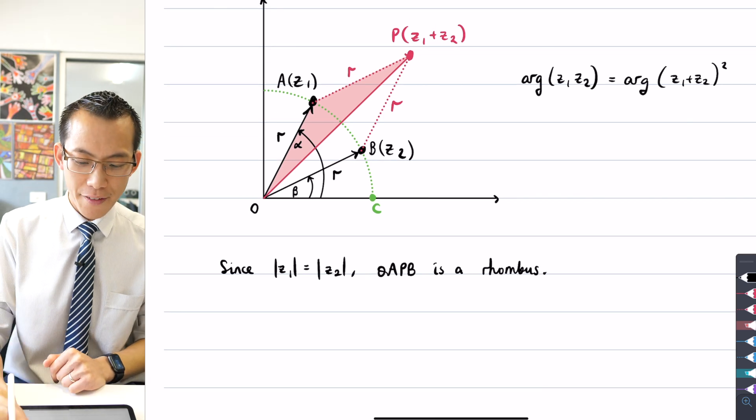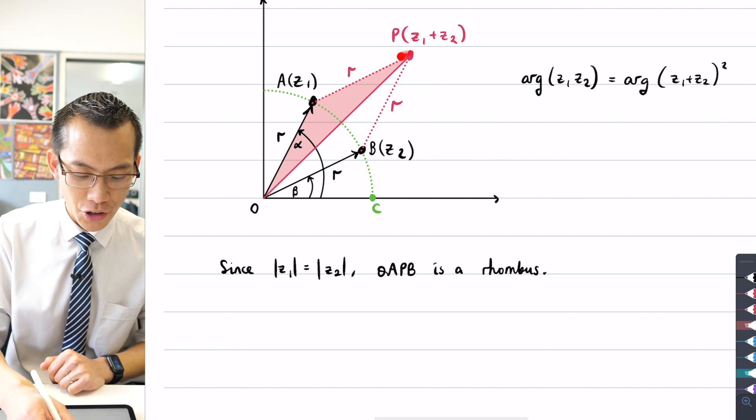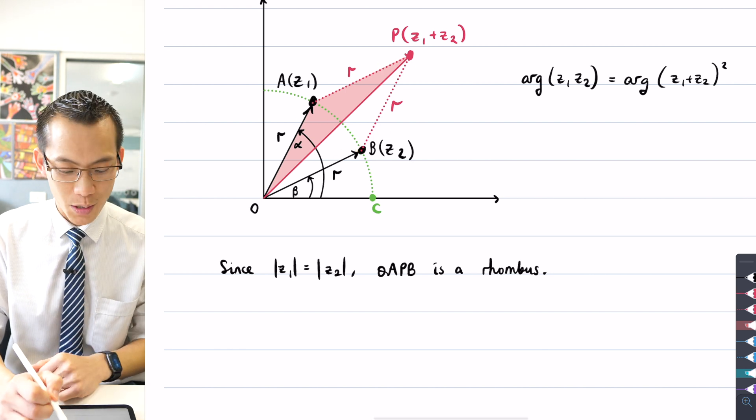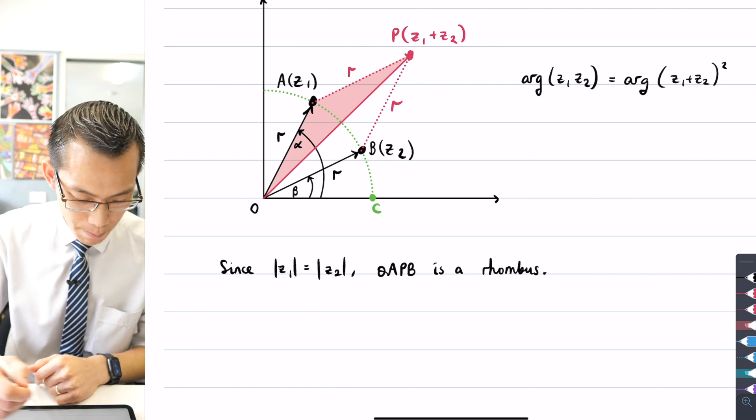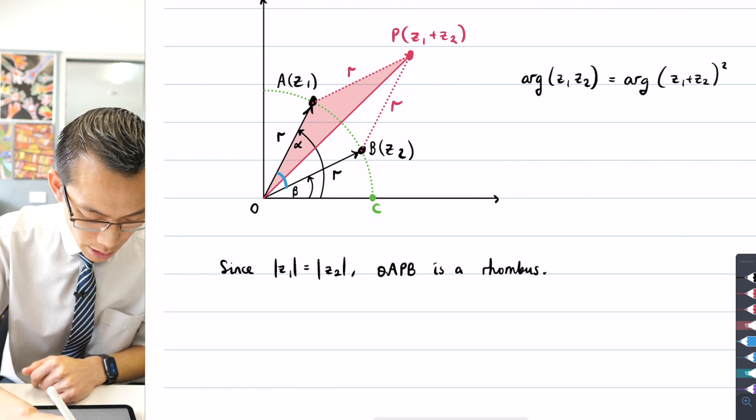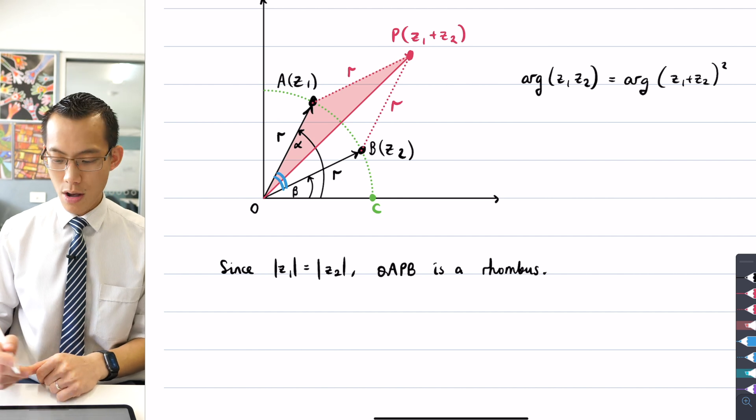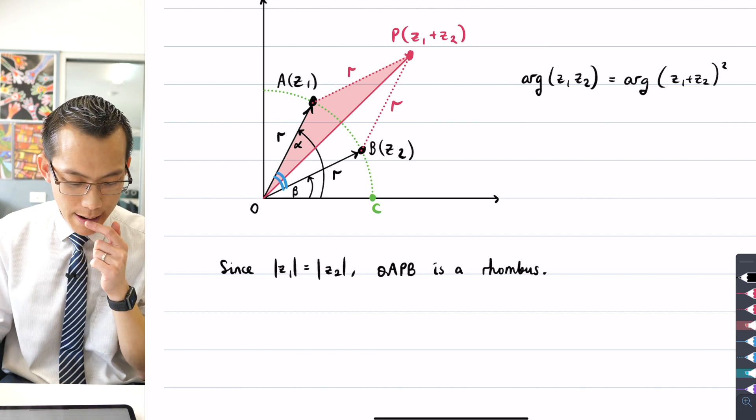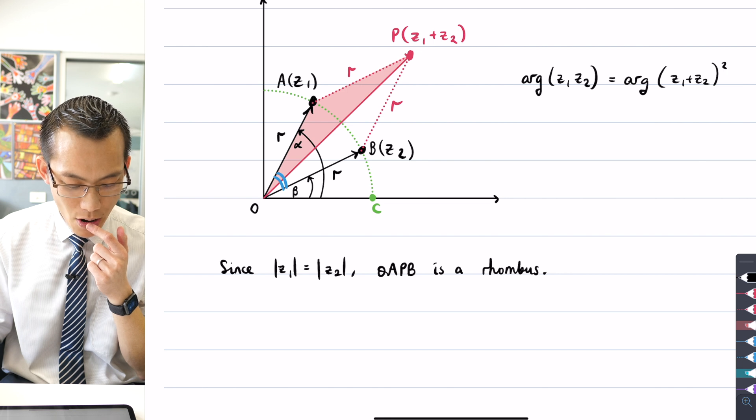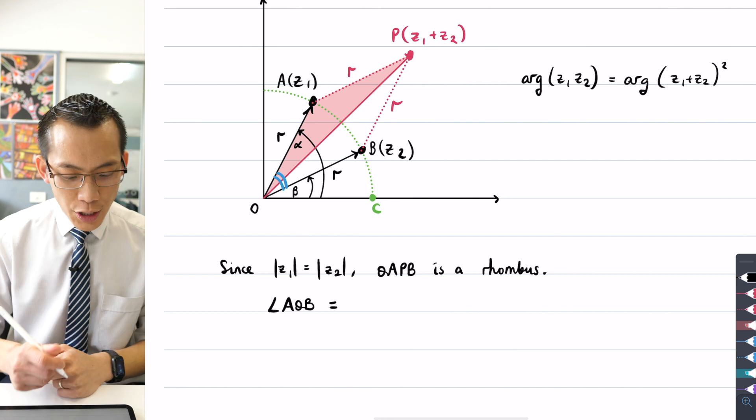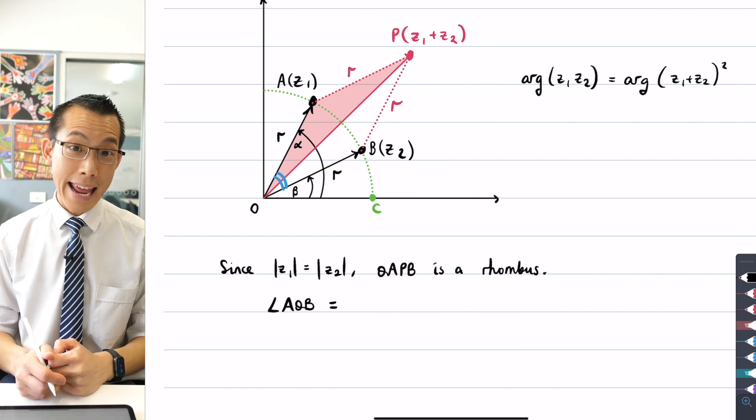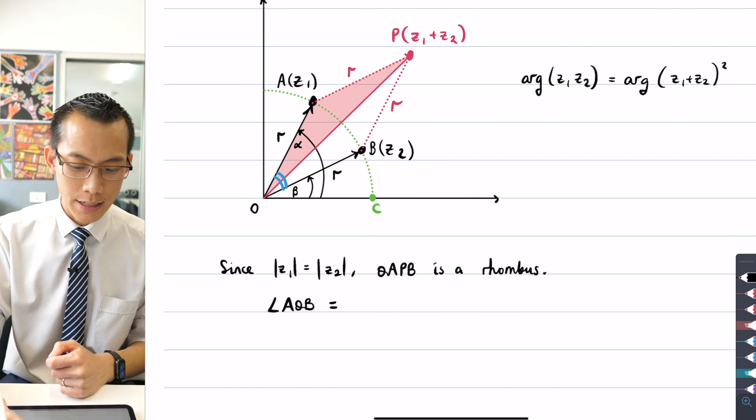I now want to use that fact to do some work with the angles inside of this. So what is this angle here? This is the angle in the corner of the rhombus. Angle AOB, that's the name of it. How do I get it in terms of the angles that I've already marked in?